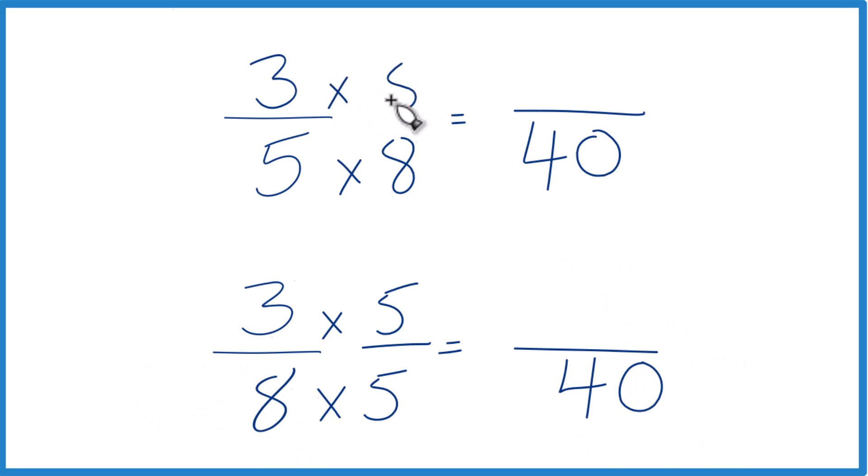Up here we'll multiply by eight, three times eight is 24. Down here, three times five is 15.